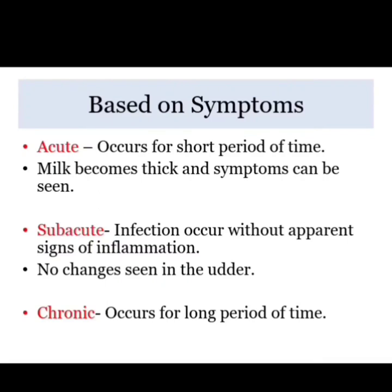Mastitis based on symptoms: First, acute mastitis occurs for a short period of time; milk becomes very thick and symptoms can be seen. Second, sub-acute mastitis — infection occurs without apparent signs of inflammation and no change is seen in the udder. Last, chronic mastitis occurs for a long period of time.